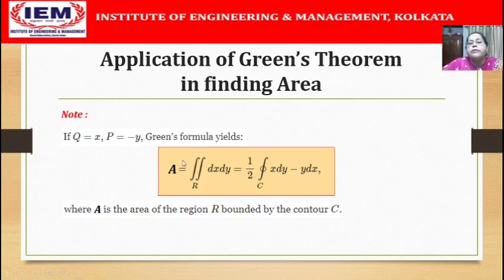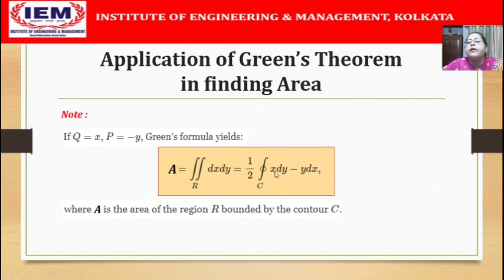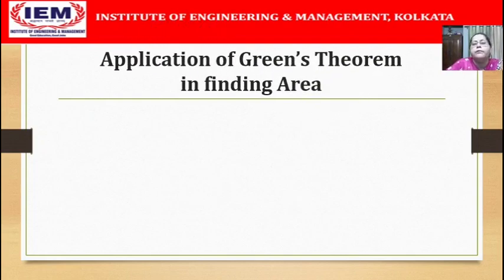The double integral dx dy over R gives nothing but the area of the region R. Thus, Green's theorem gives us a formula for evaluating the area of the region R in terms of the line integral: half of x dy minus y dx integrated along the contour C. Let us now see an example of this application of Green's theorem in finding area.